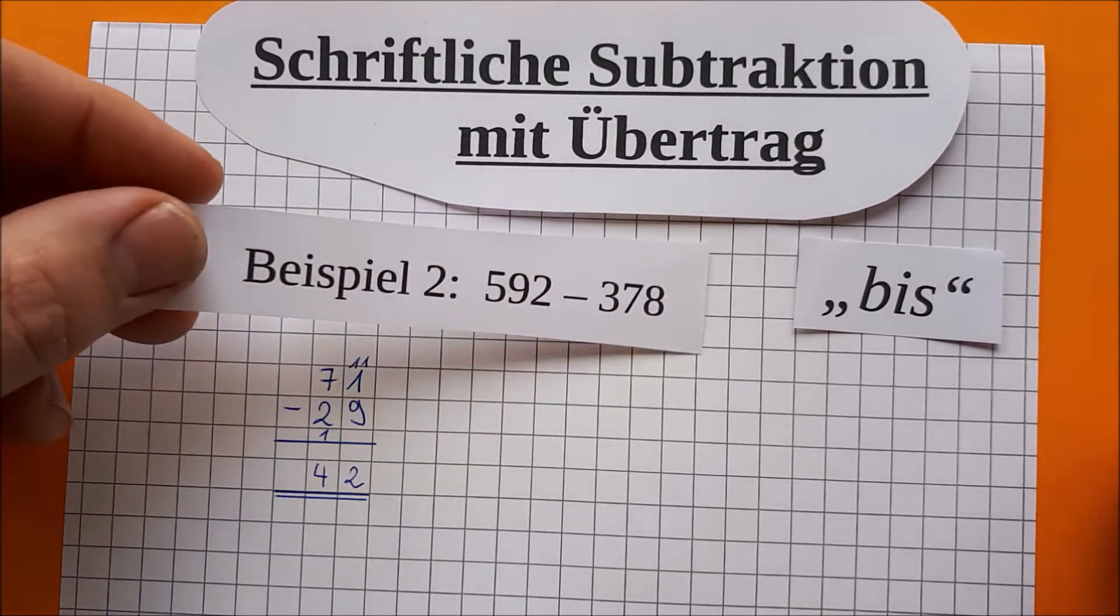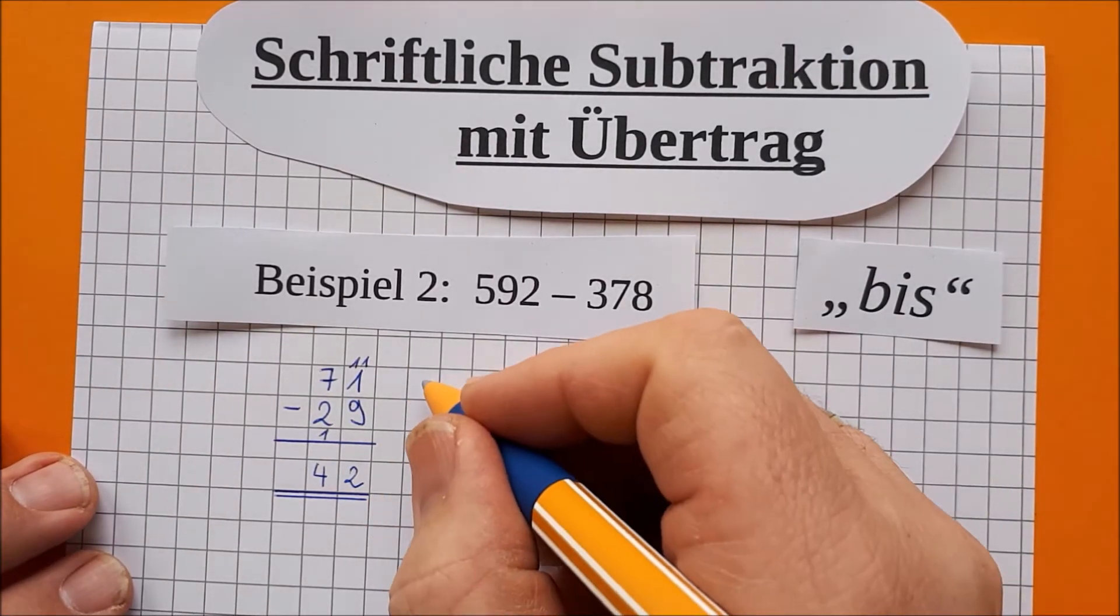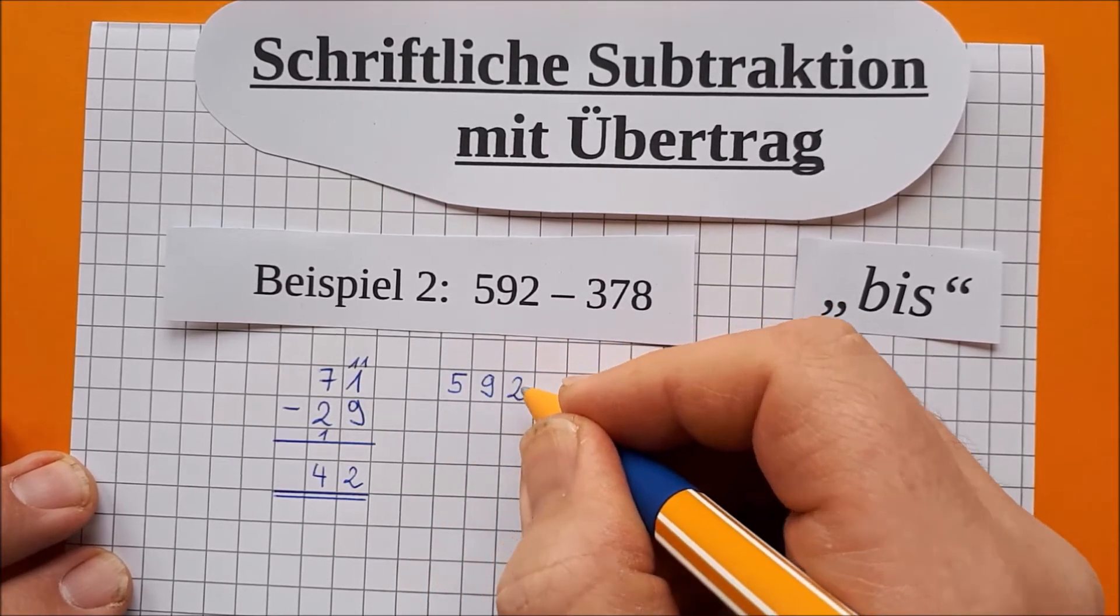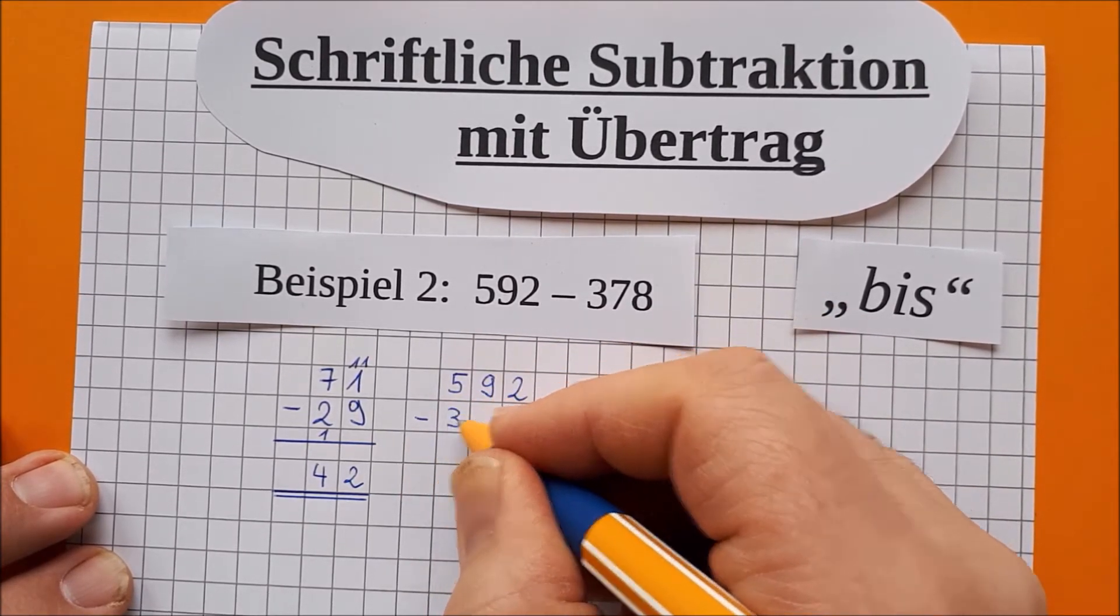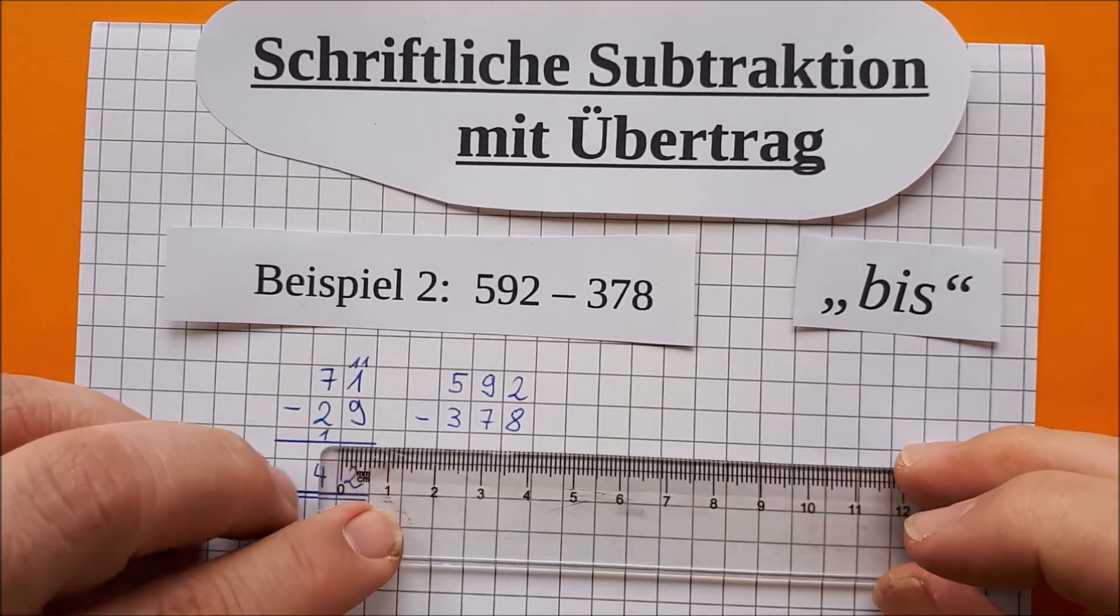Beispielaufgabe 2. So. 592 minus 378. Die schreibe ich erstmal untereinander. 592 minus 378. Da kommt ein Strich drunter.